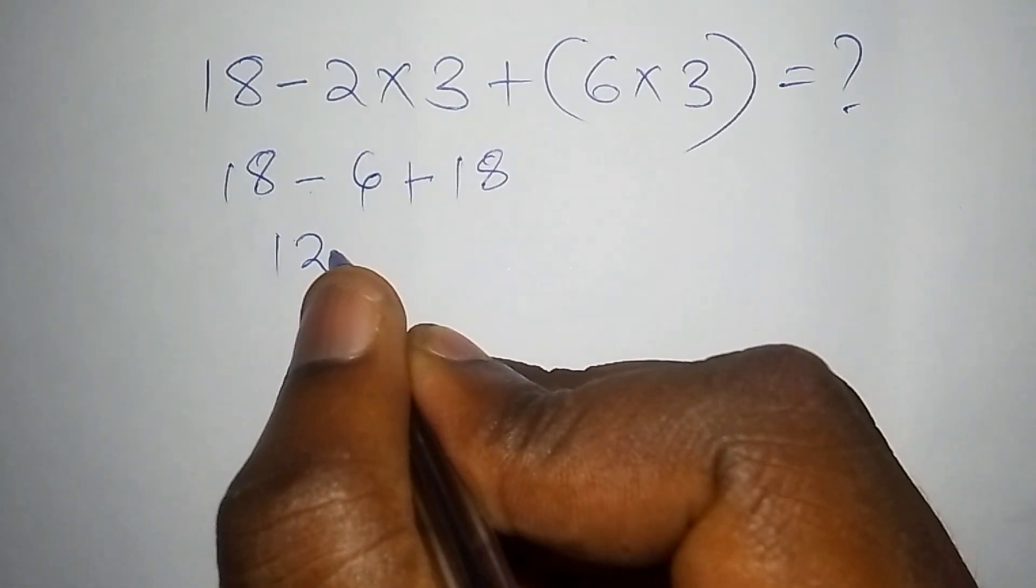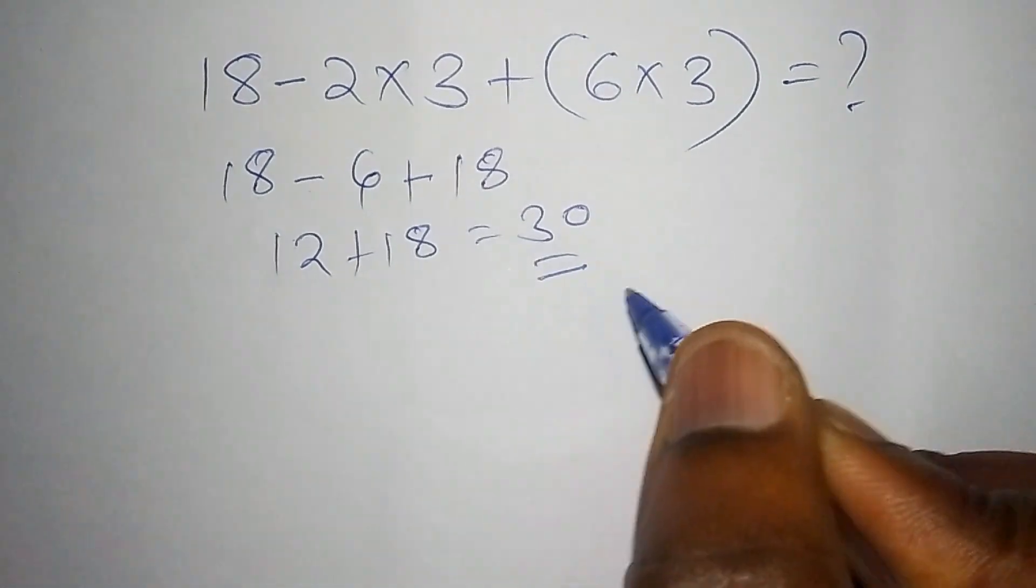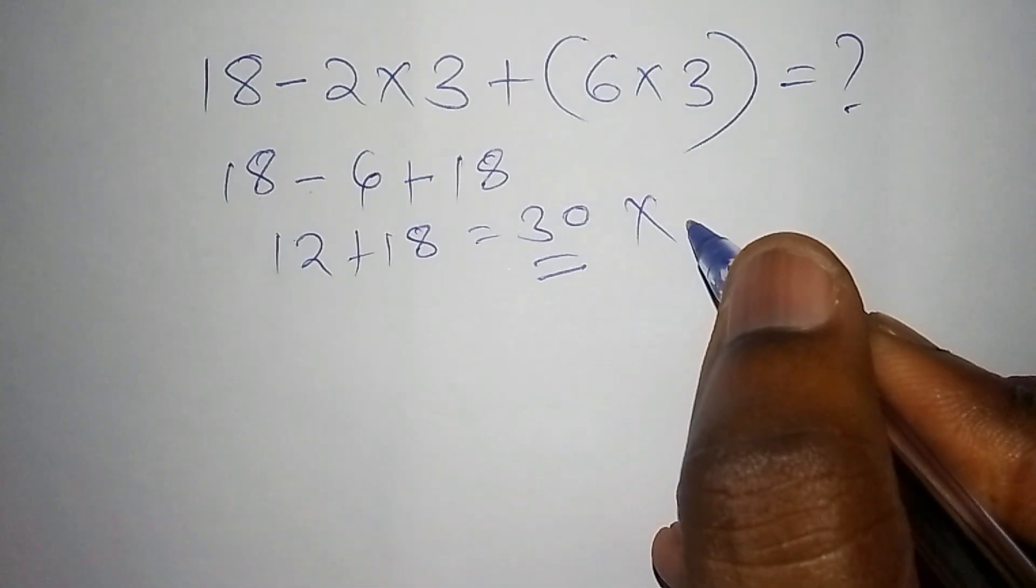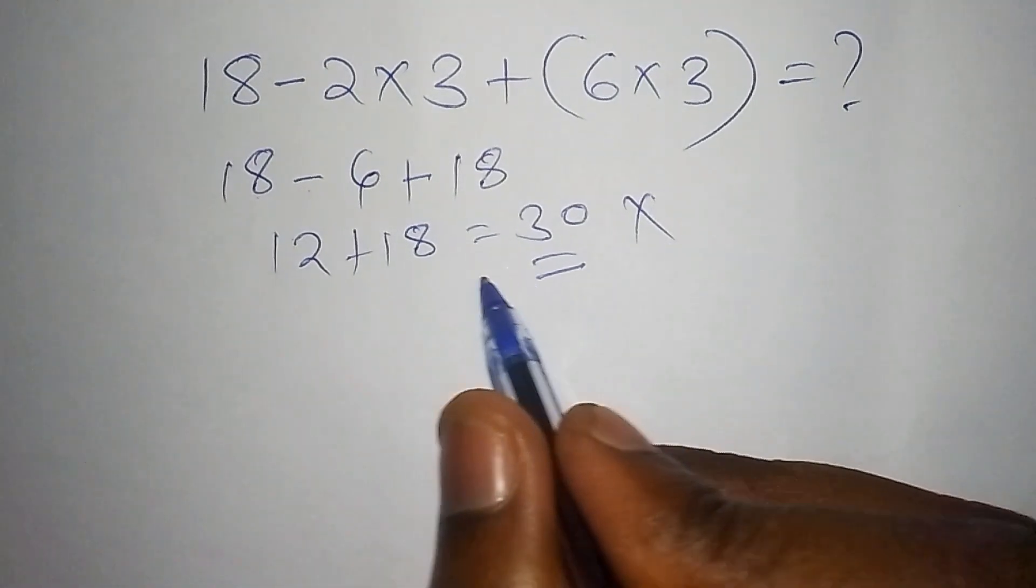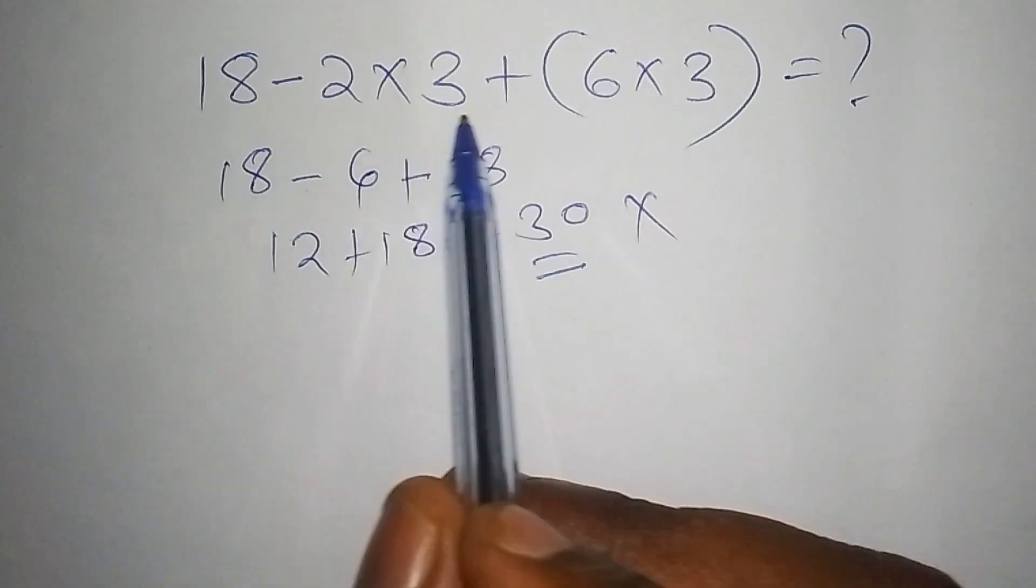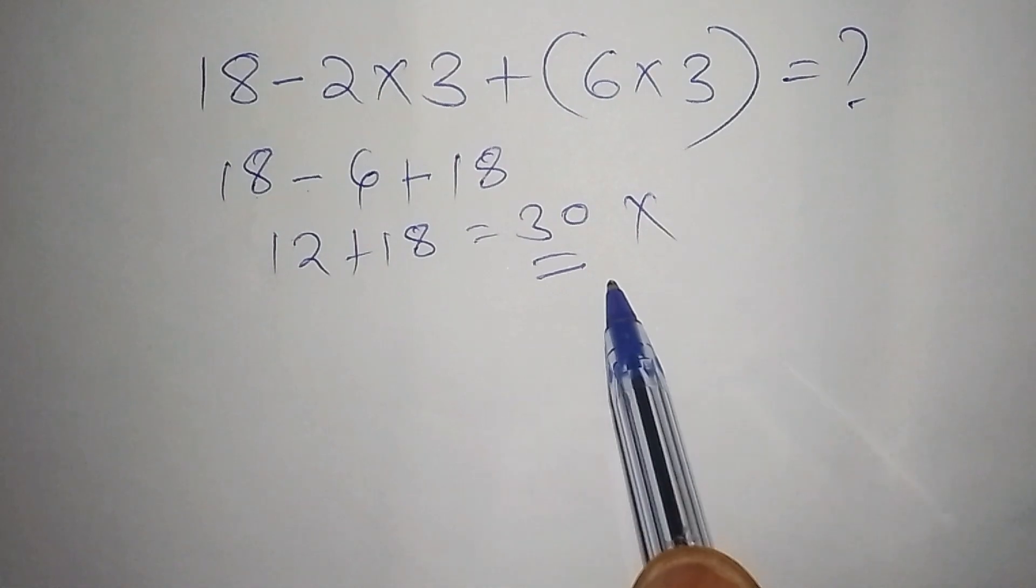12 plus 18, finally we have 30. 30 might be the correct answer but it has not followed the correct order of operation. This might not work with other math problems. If you just work it out directly like this, you might end up doing it wrong. You can pause this video to share feedback at the end.